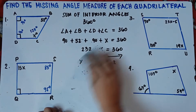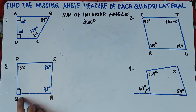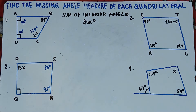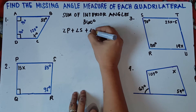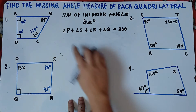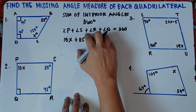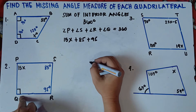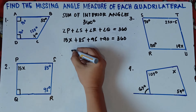Let's try number 2. We have a given 90 degrees angle, and we're told to find this angle — it's 15x. So we add all the angles: angle P plus angle S plus angle R plus angle Q equals 360. Just ignore the degrees first. Angle P is 15x, plus angle S is 85 degrees, angle R is 95 degrees.